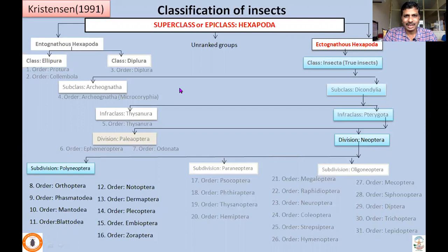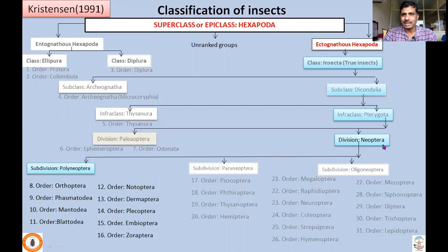Superclass or Epi-class Hexapoda consists of two unranked groups: Entognatha Hexapoda and Ectognatha Hexapoda. Entognatha consists of Class Ellipura, whereas Ectognatha consists of Class Insecta, which includes true insects. Class Insecta has two subclasses: Subclass Archaeognatha and Subclass Dicondylia. Dicondylia consists of Infraclass Thysanura and Infraclass Pterygota, meaning winged insects. In the previous lecture, we studied the general characters of Orders Ephemeroptera and Odonata, which do not have the wing flexion mechanism, whereas all other insects will have the wing bending mechanism — the ability to bend the wing above the abdomen at rest. These are Neoptera insects, an advanced group.